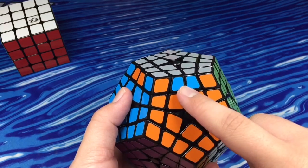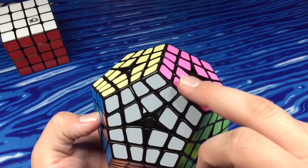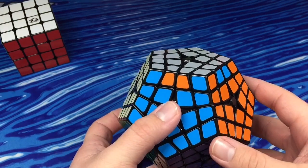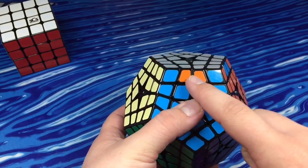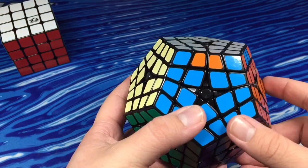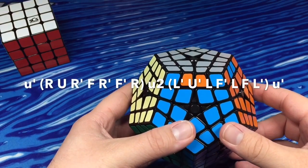There's also, if you have the edge here and then the other ones over here or here, you can just do the same algorithm. Just hold the incorrect one in the front. So you hold it here and do this algorithm.